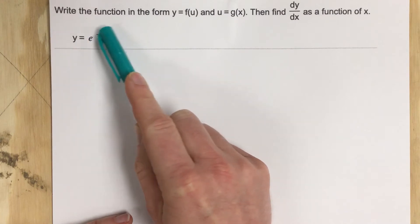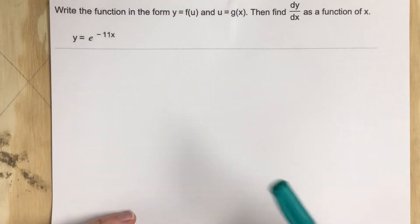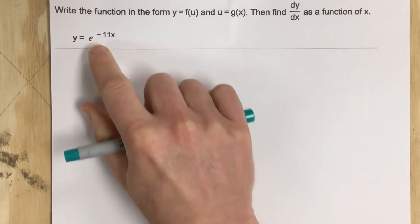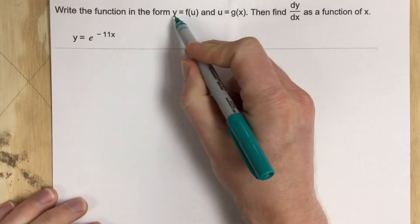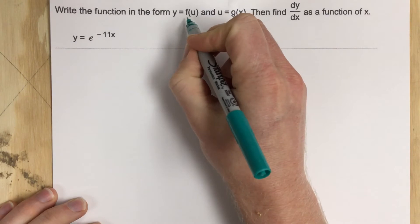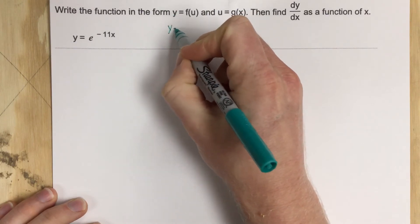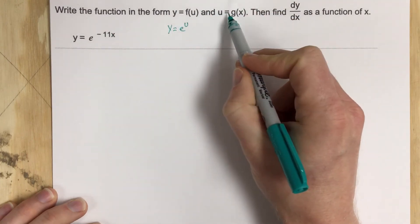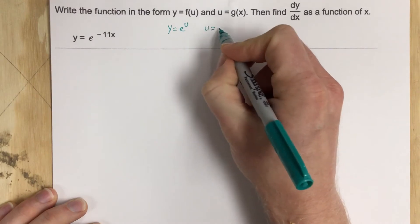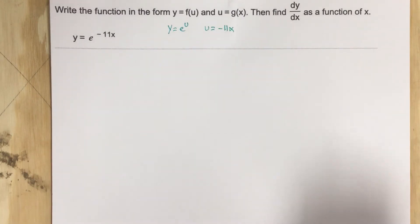We have actually found derivatives of functions like this before, and we've used the chain rule but didn't really know it. So we're going to make this all make sense now by using the chain rule here. The outside function is y equals e to the u, and u is the inside function — u equals g of x, so u equals negative 11x. So we have two different functions here that we're going to take the derivative of using the chain rule.